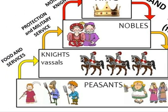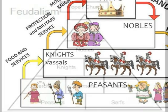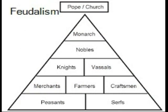The vassals then passed on most of the land to knights. The land received by these knights, or lords, was called a manor and included the village and the surrounding land.